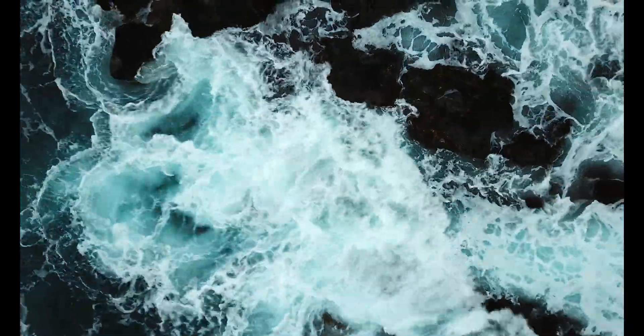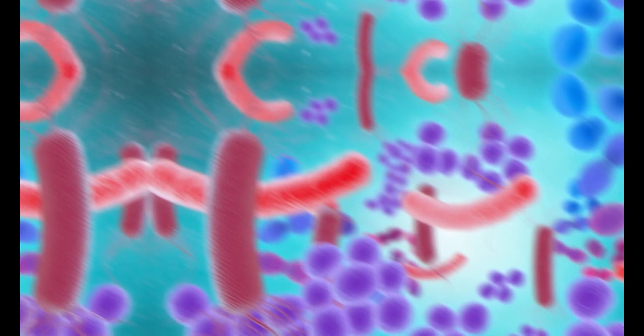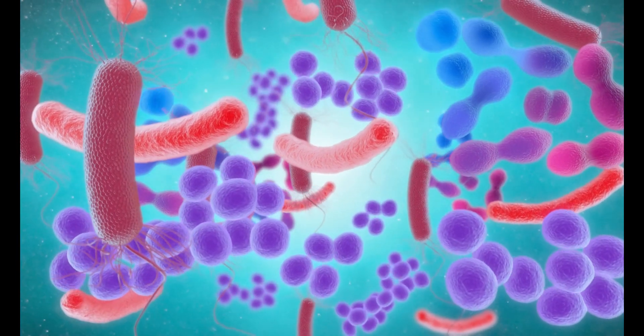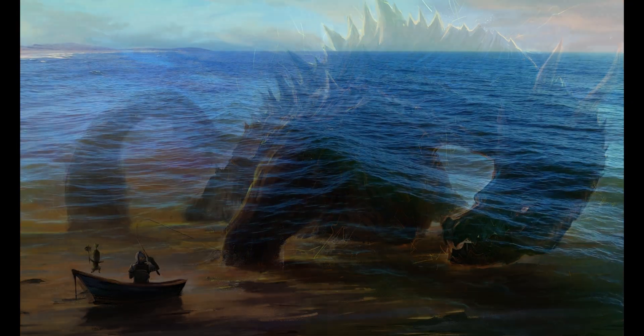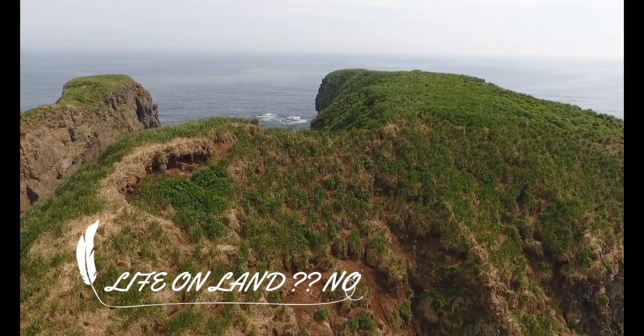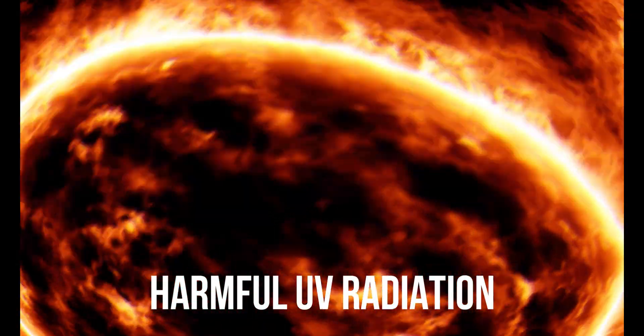540 million years ago, in an ocean full of oxygen, life in the ocean blossoms. From microscopic bacteria to monsters, the sea level seems unstoppable. But life on land? Still impossible. The only reason is the deadly ultraviolet radiation from the sun.